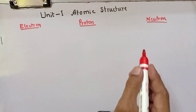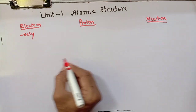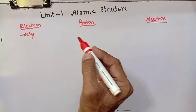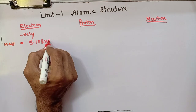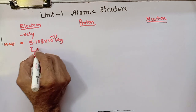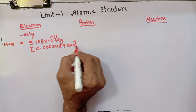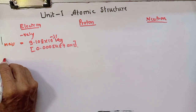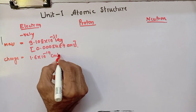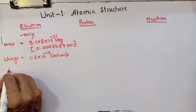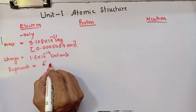Let us study about these fundamental particles a little bit more. If you consider the electron first, it is a negatively charged particle revolving around the nucleus in order to balance the number of protons present in the nucleus. The mass of electron is equal to 9.108×10⁻³¹ kg or 0.0005487 atomic mass unit.